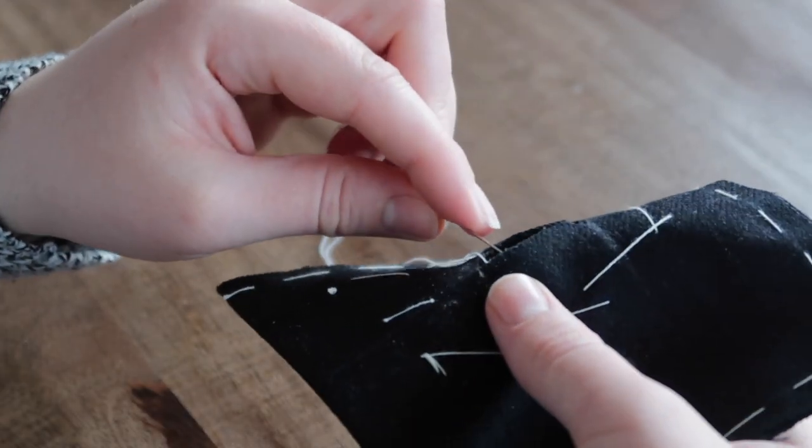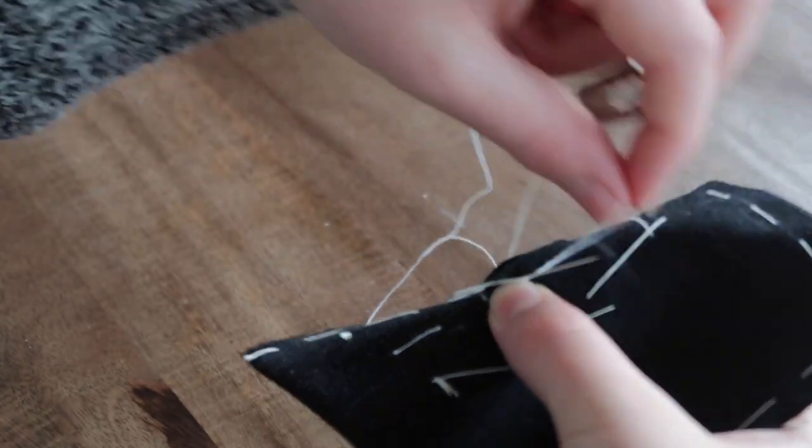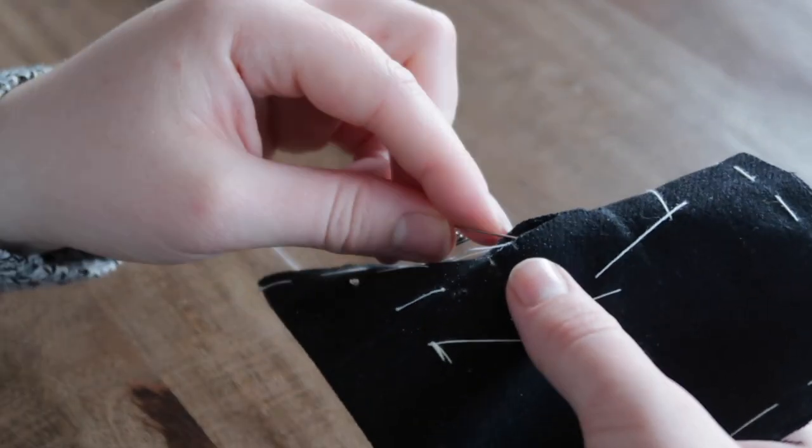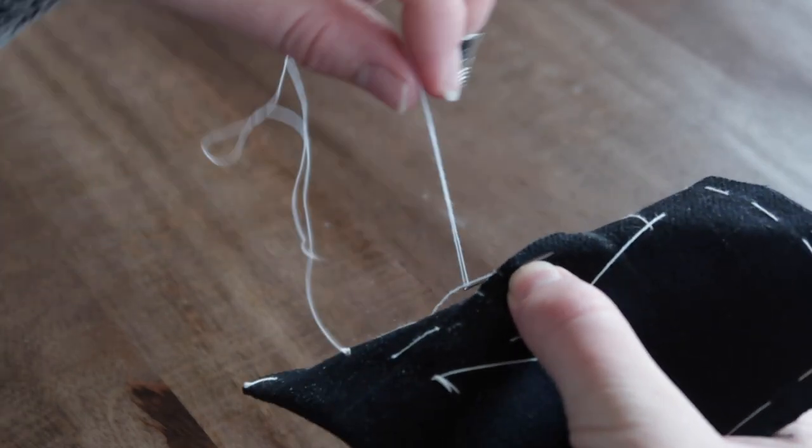So your stitch, basically with this thread, it's supposed to actually disappear. It's an overlocking thread that goes underneath your buttonhole stitch, but it's basically to hold everything in place together.